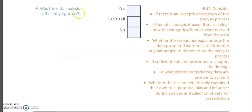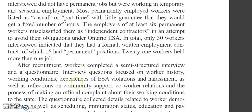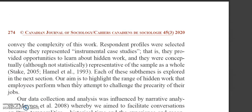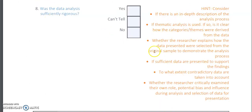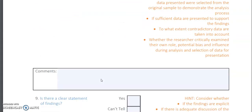Checklist item eight asks: was the data analysis sufficiently rigorous? There is an in-depth description of the analysis process in the paper. It's explicitly stated that narrative analysis was used to guide both data collection and analysis. There are different types of qualitative analysis — phenomenological, thematic, historical — but here narrative analysis was clearly stated, which I think is excellent. You can tick that box and write around it using this as your guide.